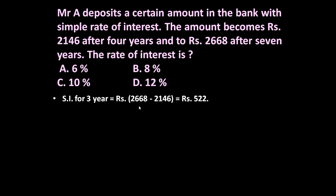This is the total amount after 7 years and this is the total amount after 4 years. The difference of these two will give us the simple interest for 3 years. So 2668 minus 2146 gives us the simple interest for 3 years, which is Rs 522.